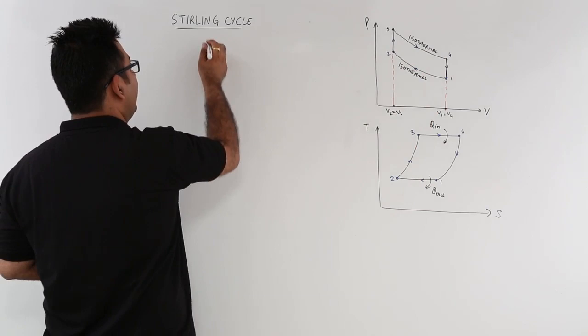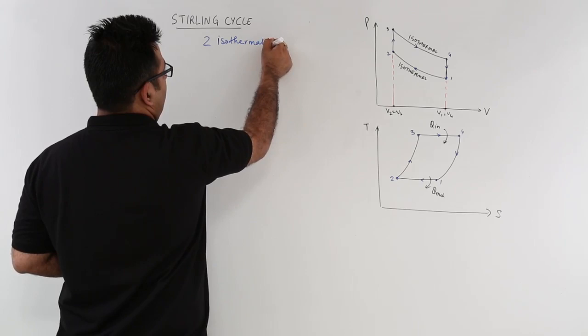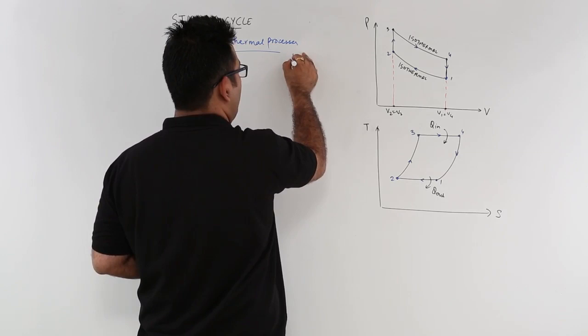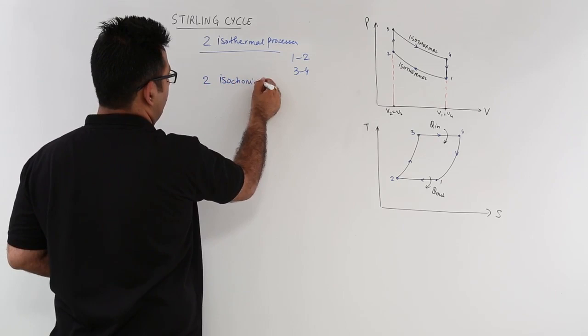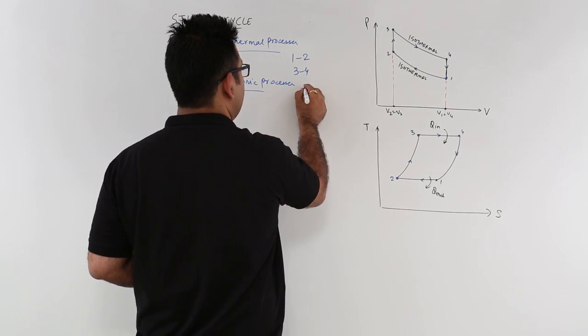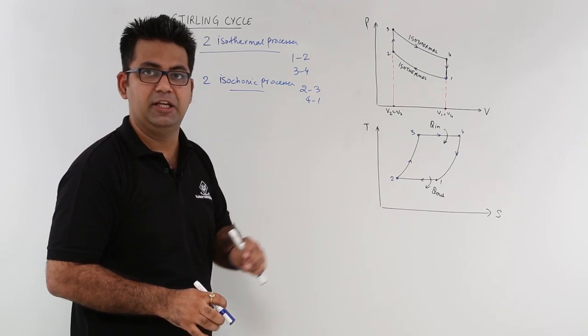So you will have two isothermal processes. These isothermal processes are 1 to 2 and then 3 to 4. And you have two isochoric processes, and that is 2 to 3 and then 4 to 1. So this is what is there in the Stirling cycle.